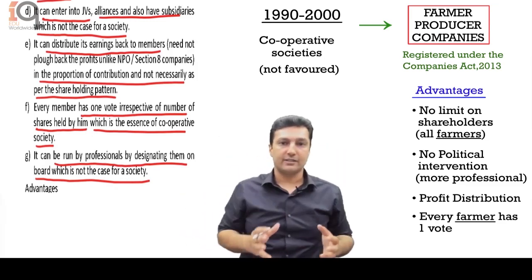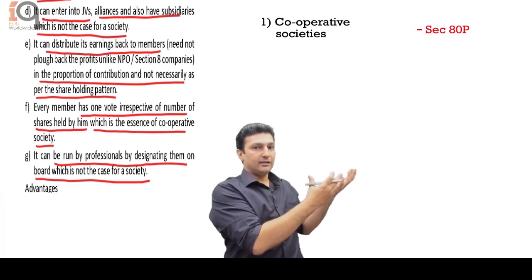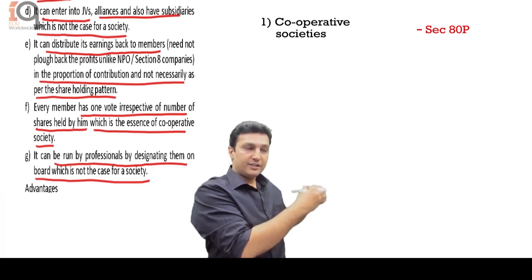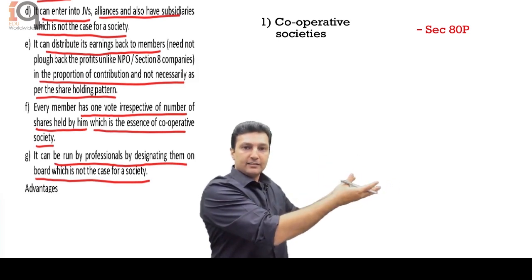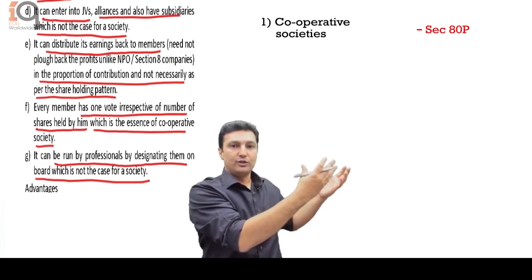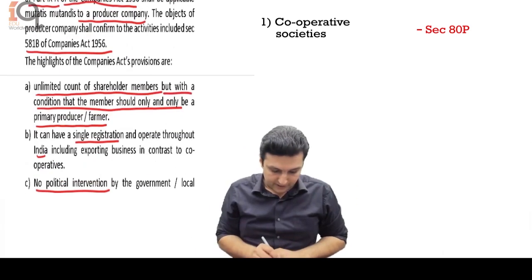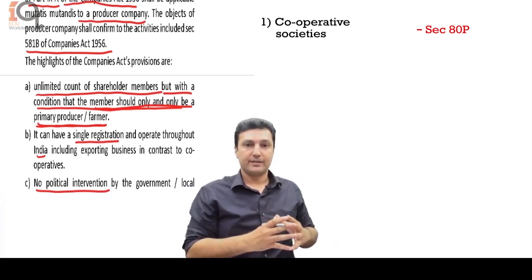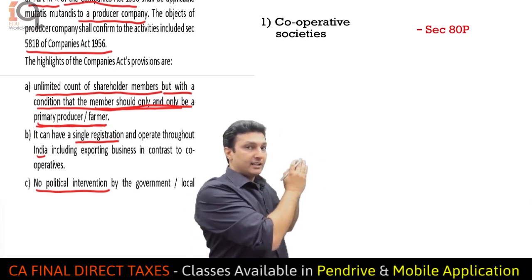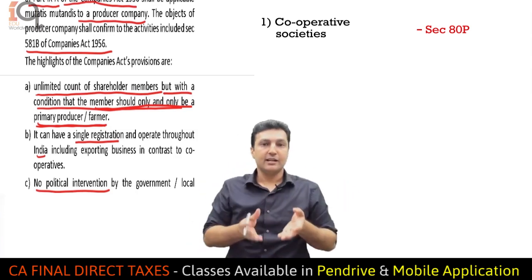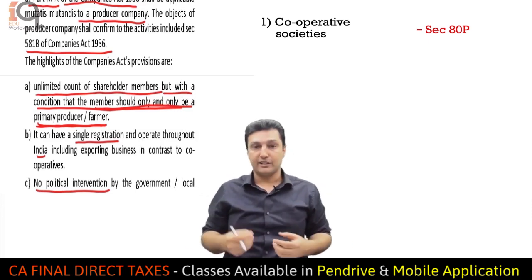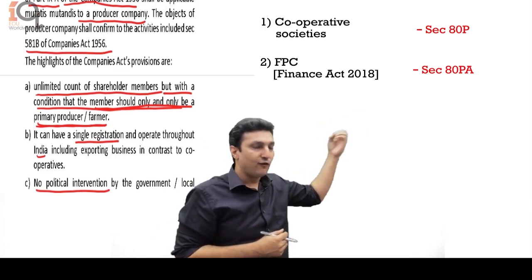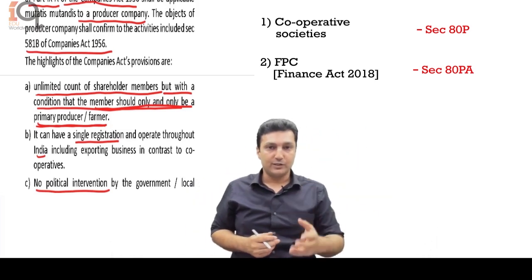In a nutshell: cooperative society was getting a deduction under ATP, but cooperative society was not a very efficient working system. Therefore, even Amul shifted to forming a company under the Companies Act to run it professionally — but this is not a normal company; you cannot issue shares to the public; members must only be primary producers or farmers. The problem is ATP gives a deduction to cooperative societies but there was no section giving a deduction to these producer companies doing the same work. Here is where ATPA comes in, which was long promised. Finance Act 18, the finance minister fulfilled the promise by giving a deduction under ATPA to these farmer producer companies.